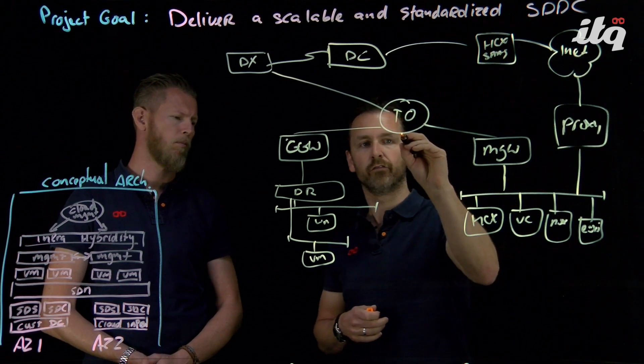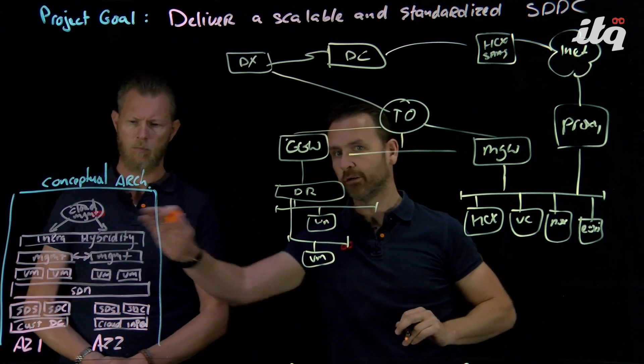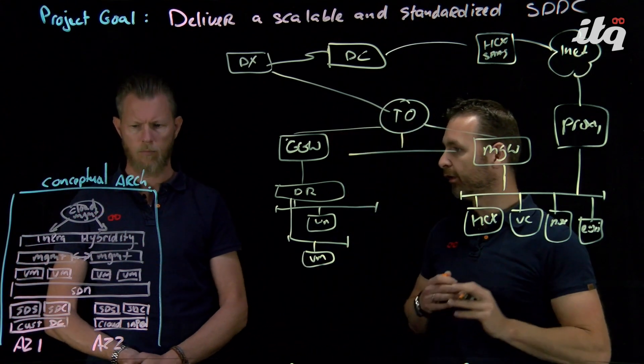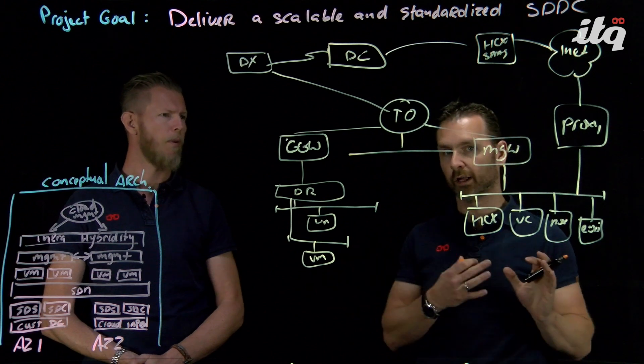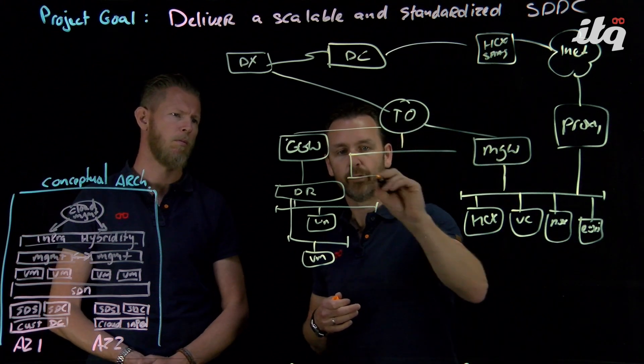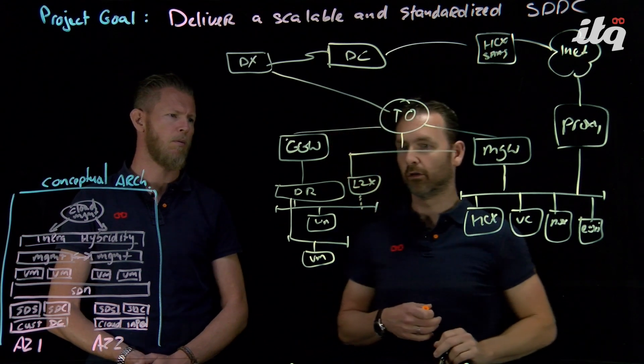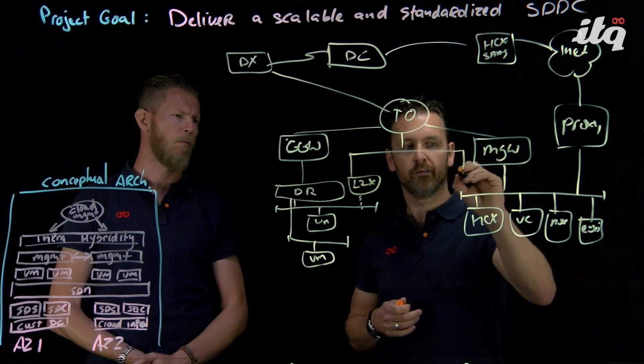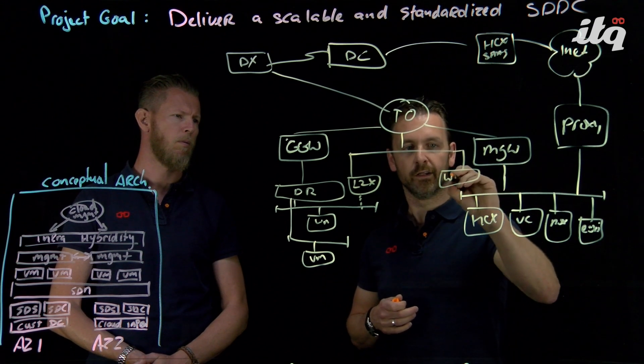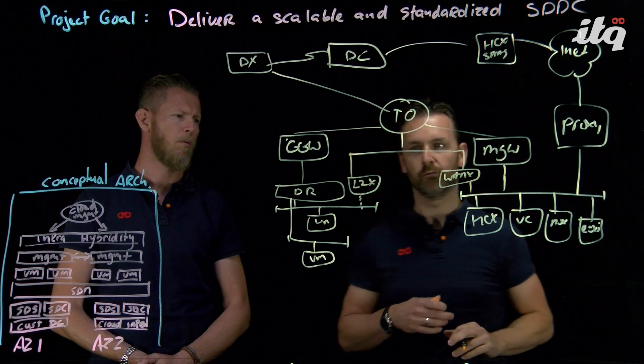Well on this side we're missing a few components because what we're really needing is a kind of layer 2 extension so we can move our workloads from on-prem to the cloud and back. So we need a component that's called layer 2 extension and that kind of connects to the logical switch, and on this side we need a component that's called the WAN extension component that's connected to the management network.